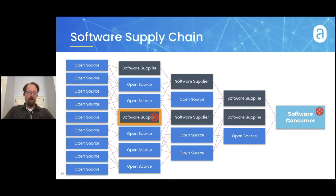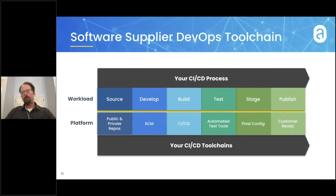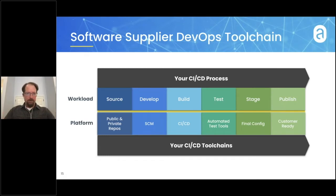If we're a software supplier and want to avoid being the organization mentioned in a major security incident, what can we do? This all goes to a view of the software supplier's DevOps toolchain. With a modern system, on the left-hand side we have our application source code — the stuff we're experts in. On the right-hand side, that application is built, executable, signed, released, and ready for the customer to deploy.